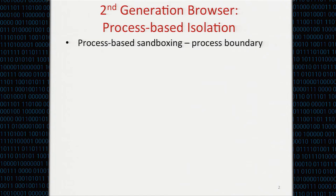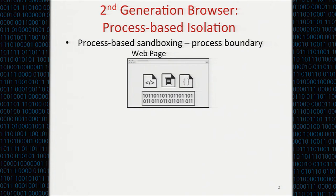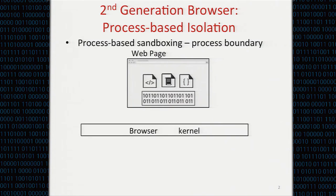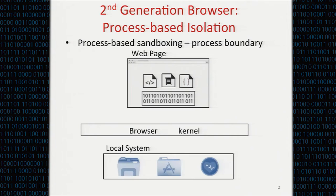In 2006, researchers started to change the landscape. It broke through when browsers started to be designed using ideas like process separation and sandboxing — the so-called second generation of web browsers, which adopt process-based isolation design. In this design, each website is hosted in two processes: one is the render process, which renders HTML and executes JavaScript, and the other is the browser kernel, which interacts with the local system and performs local operations.